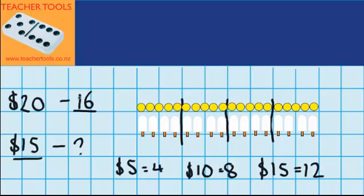So to answer my question, for $20 I can buy 16 lollipops or ice blocks. So for $15, I must be able to buy 12.